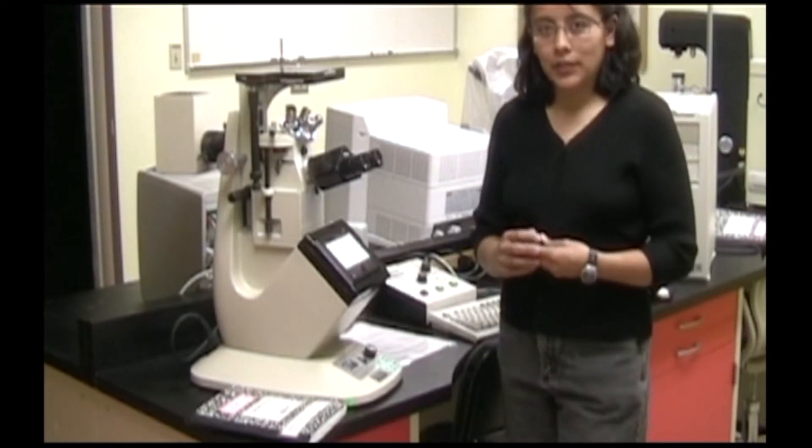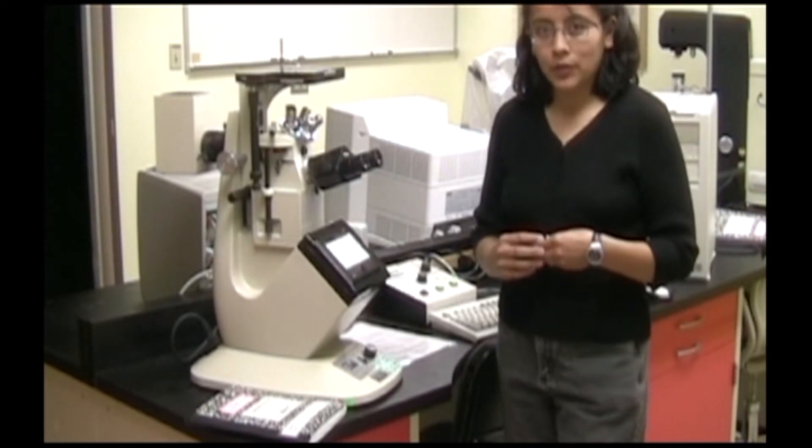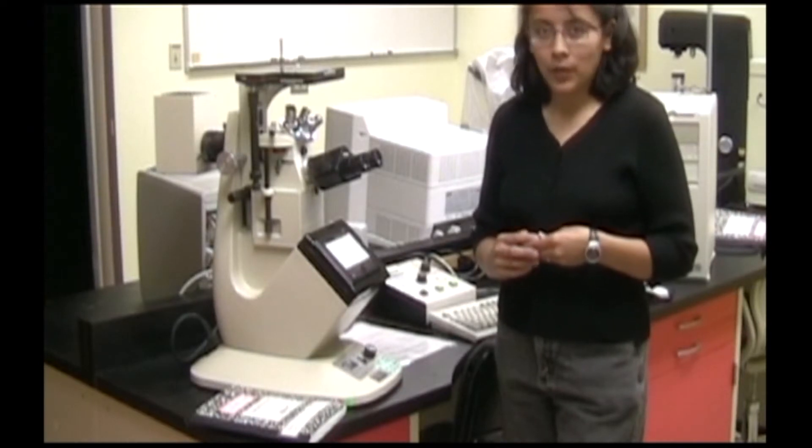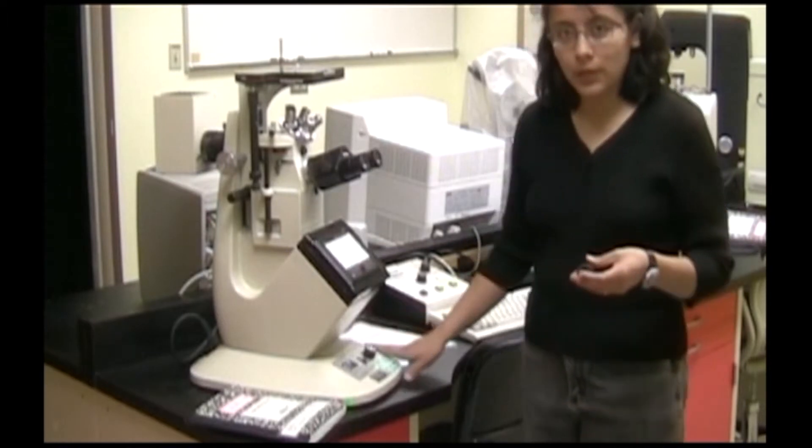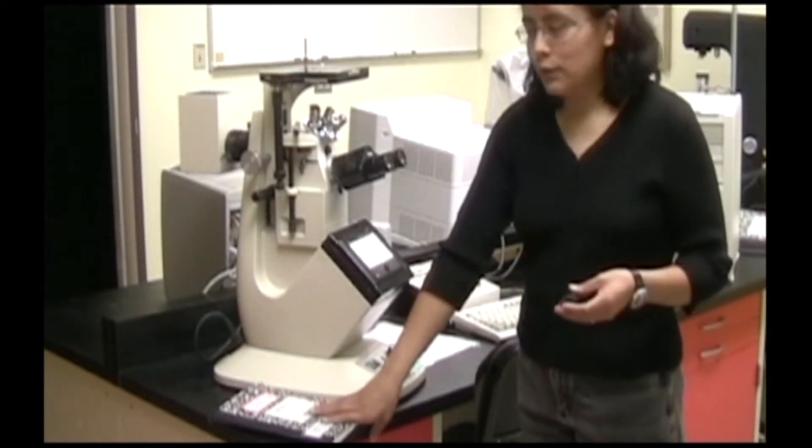During etching, you may need to look at your sample surface under a microscope to make sure that it isn't under-etched or over-etched. After you've etched, you may also want to take pictures of your sample surface. You should use the VersaMint tool for this. We sign in first.